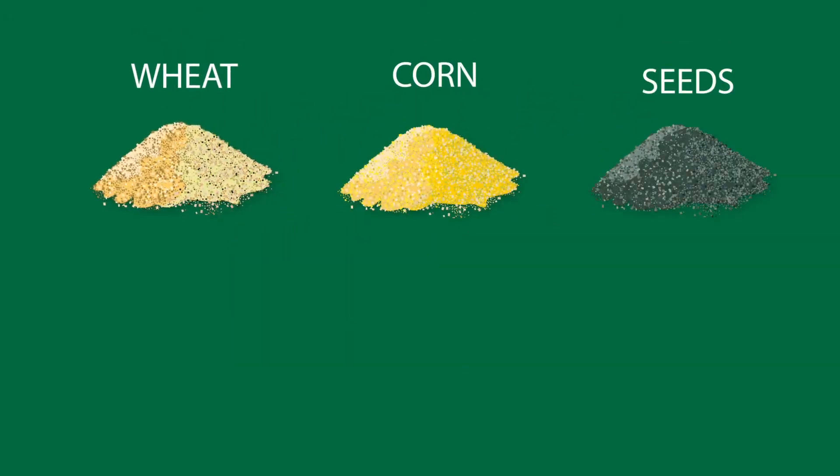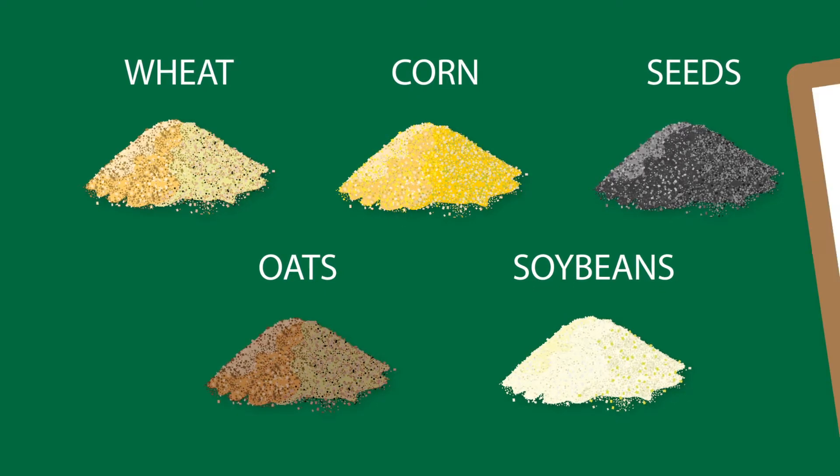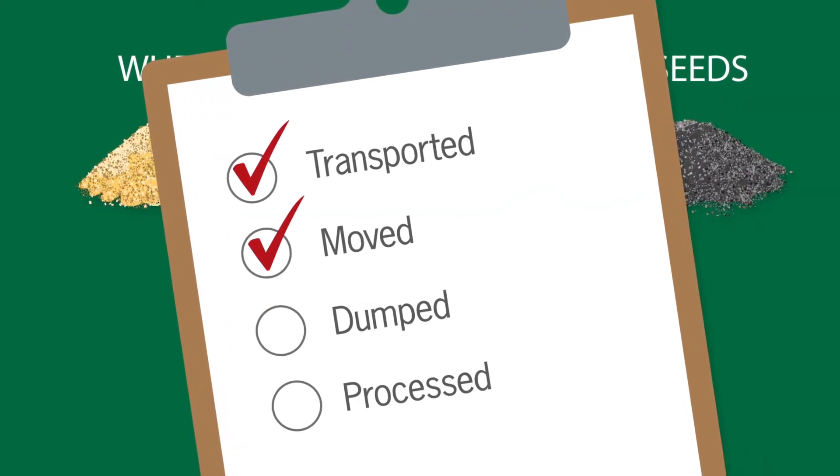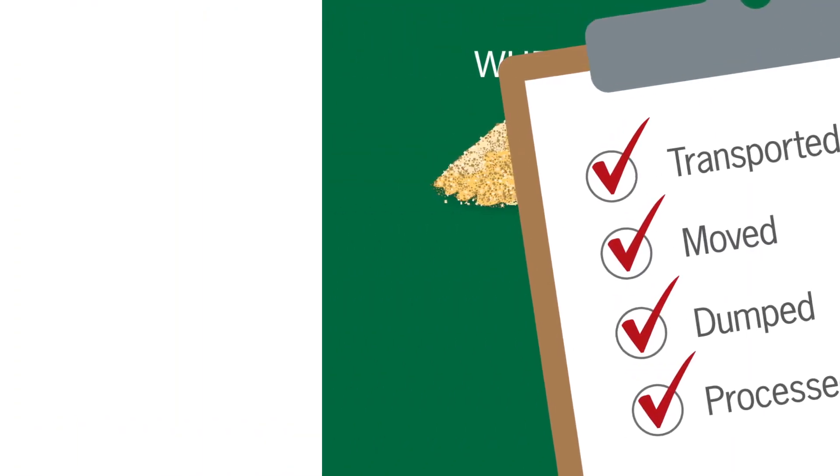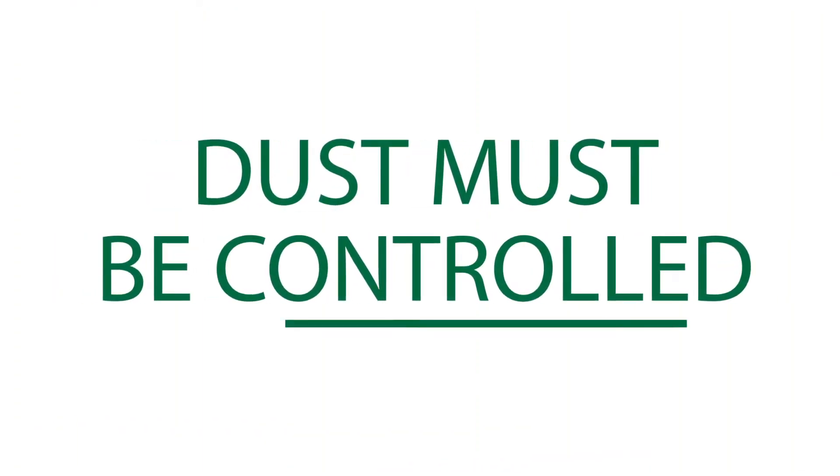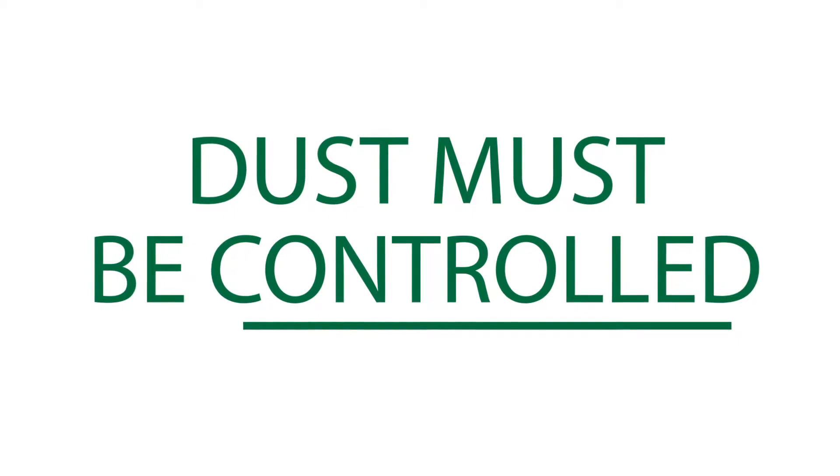Dangerous dust is produced when products like wheat, corn, seeds, oats, and soybeans are transported, moved to a storage facility, dumped from a truck or train, or processed. And that dust must be controlled to prevent combustible dust incidents.